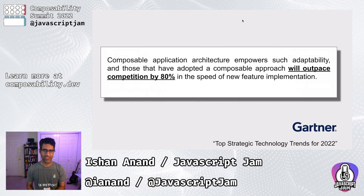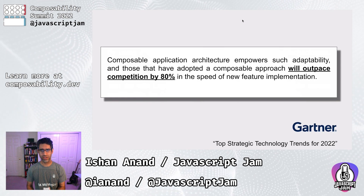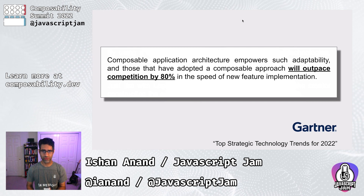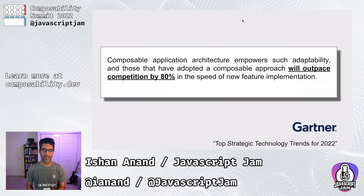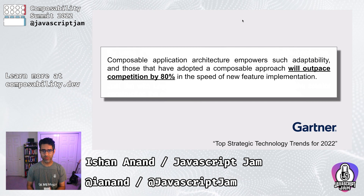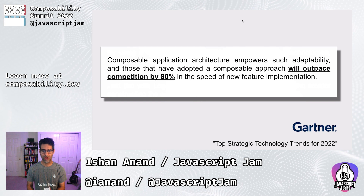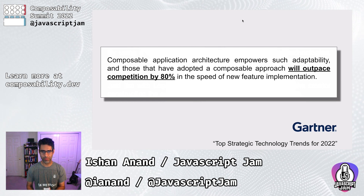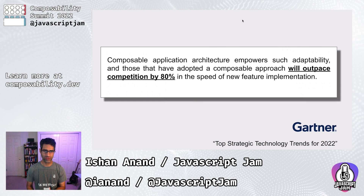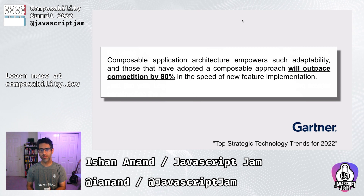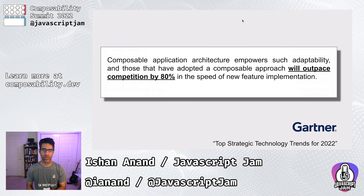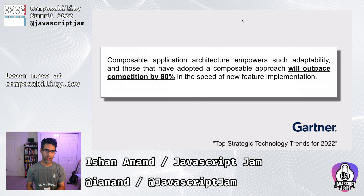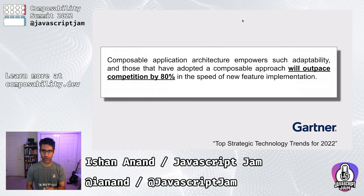Composability isn't just for developer happiness — it has a real ROI in terms of productivity. Gartner, for example, has said that teams that adopt a composable approach will outpace their competition by 80% in the implementation of new features. It was so important they named it one of their 2022 top tech trends, especially in a post-pandemic turbulent time.